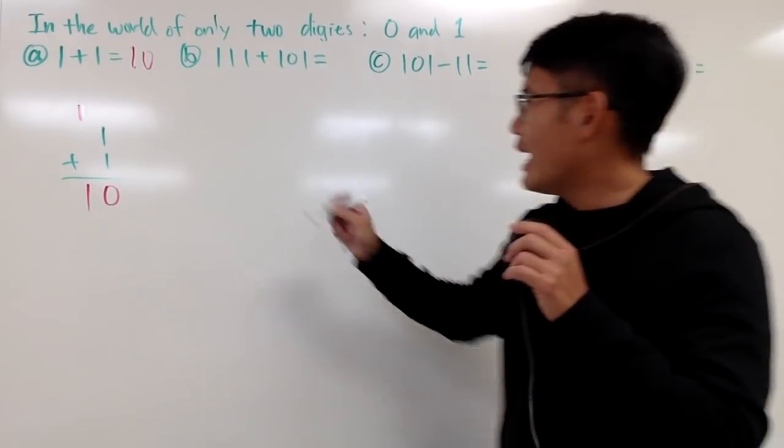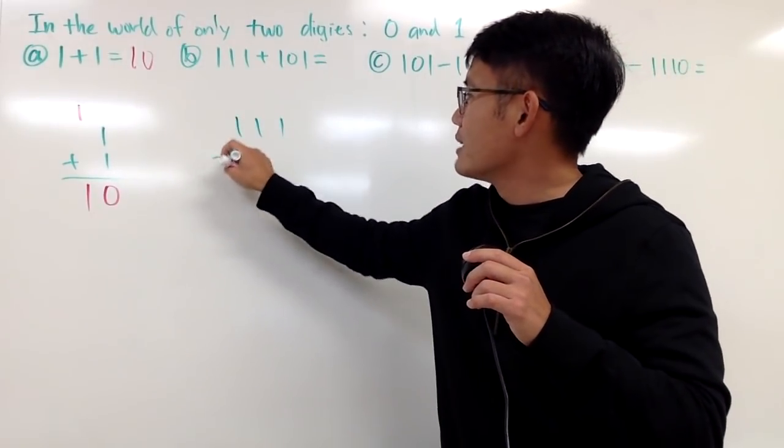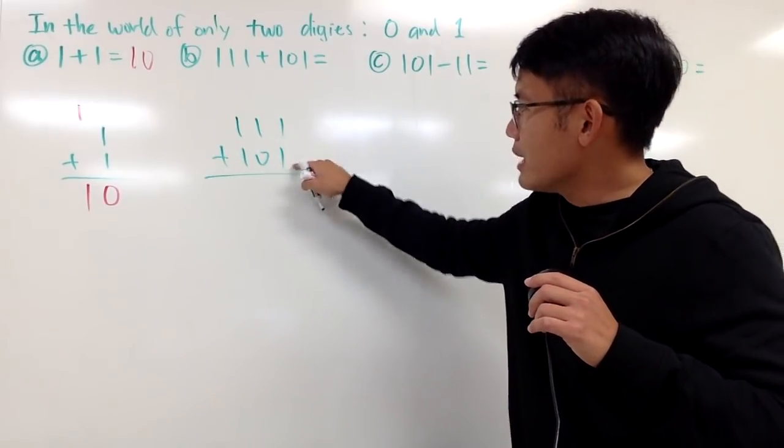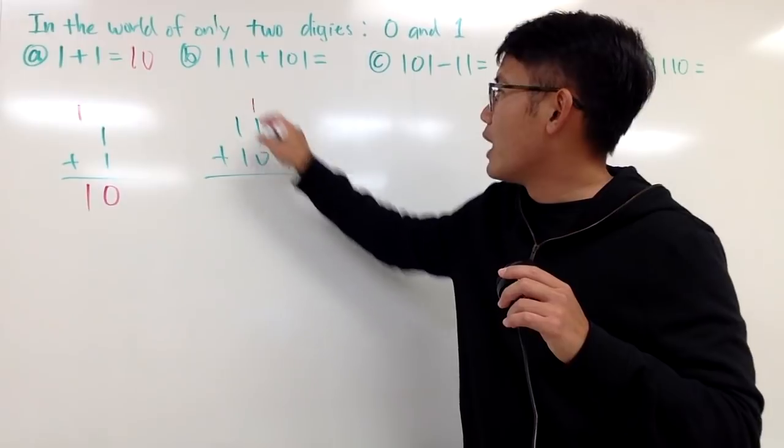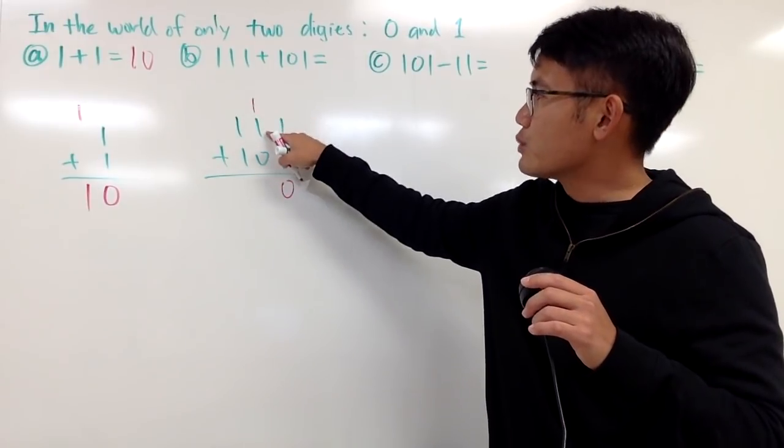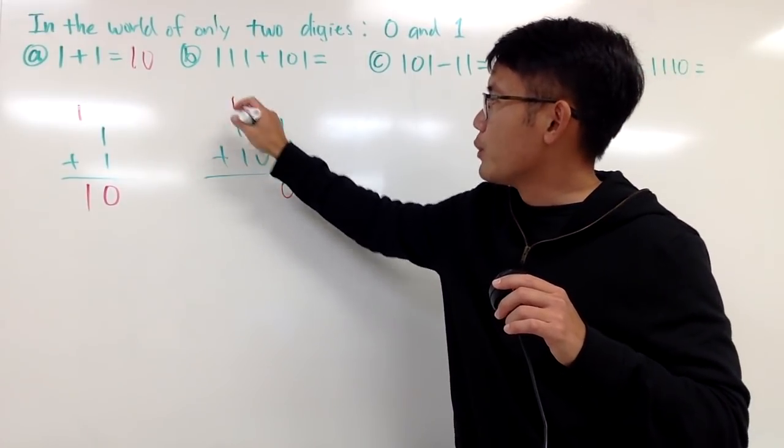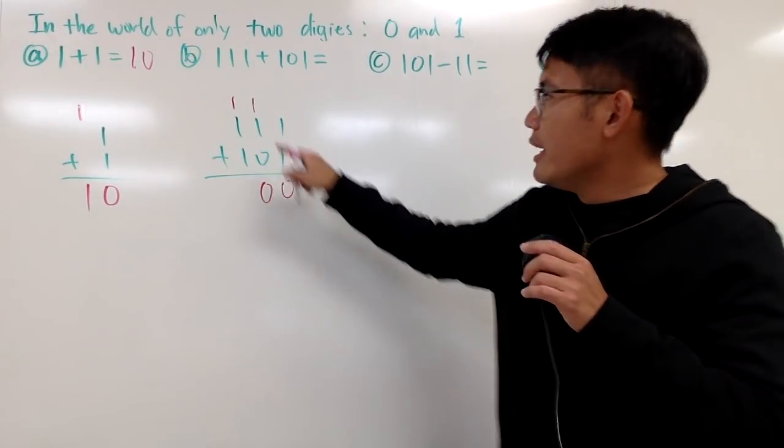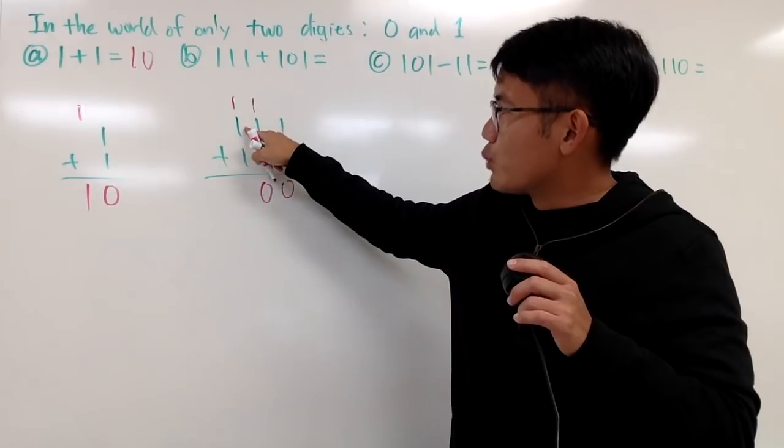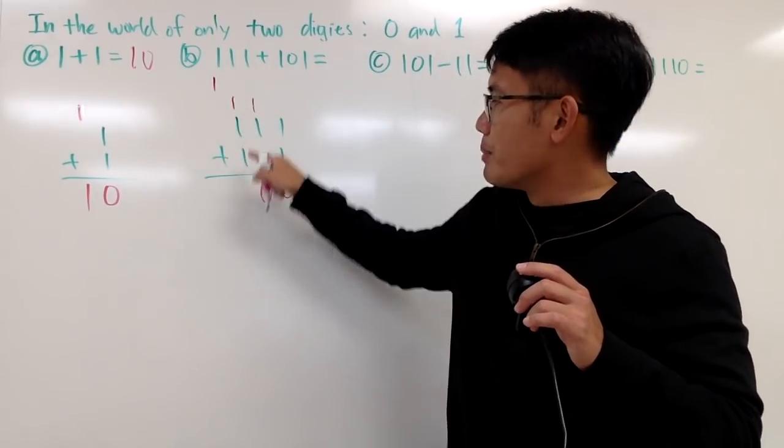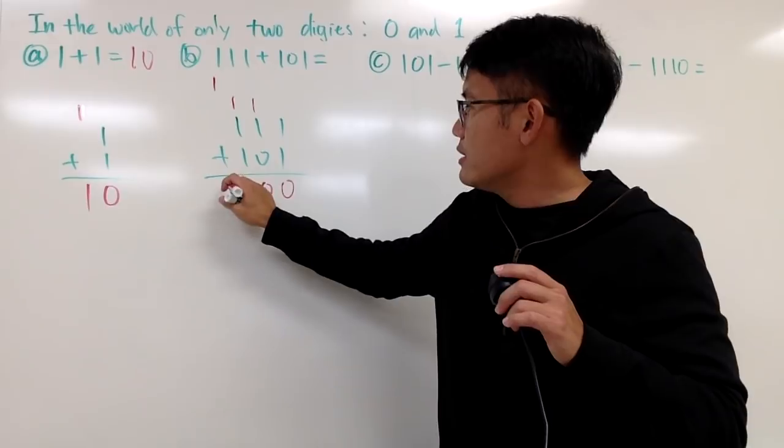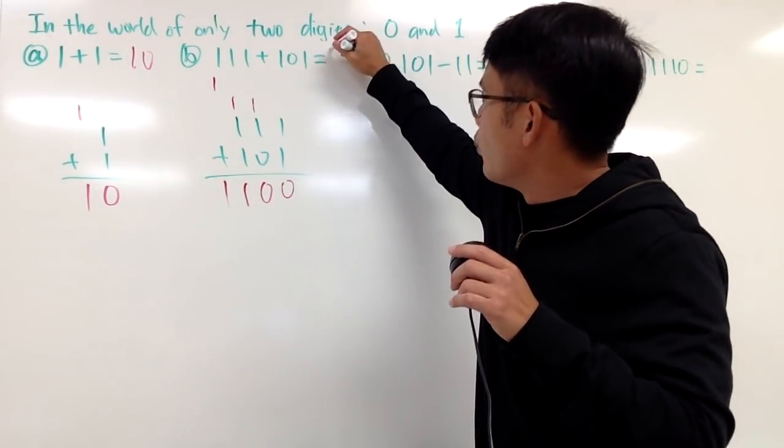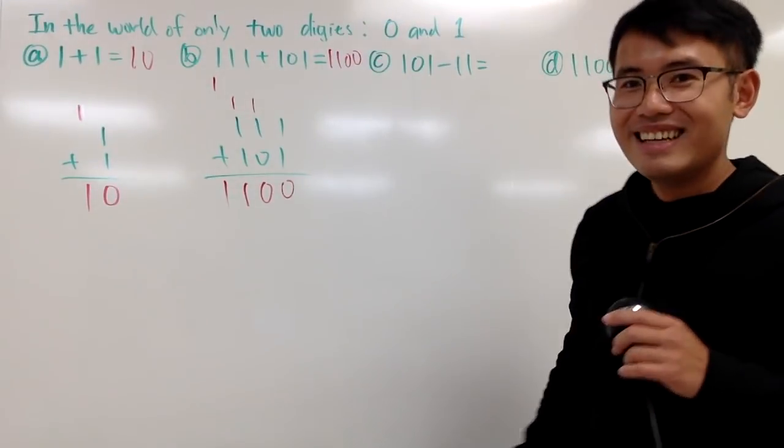And now, let's try the next one. We have 111 plus 101. And now, let's do this. 1 plus 1, just like that, is 10. And then 1 plus 1 is 10, so let me put on 10. And then 0 plus 0 is still 0, that's good. And then next, 1 plus 1 is 10. And then 0 plus 1 is 1, and then bring this down. So 111 plus 101 is 1100. And now, let's move to subtraction, because we graduated from addition.